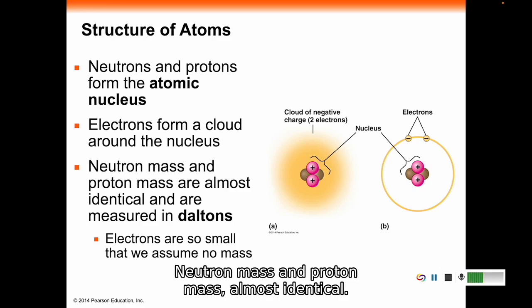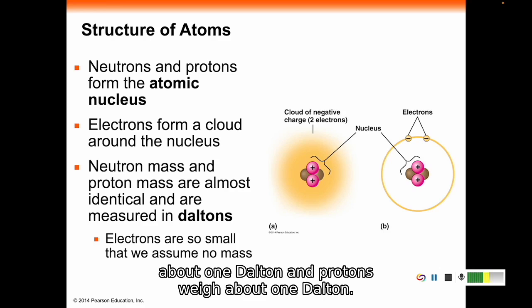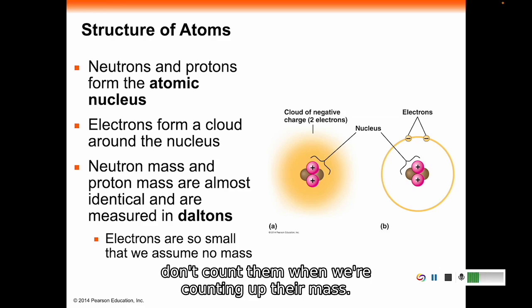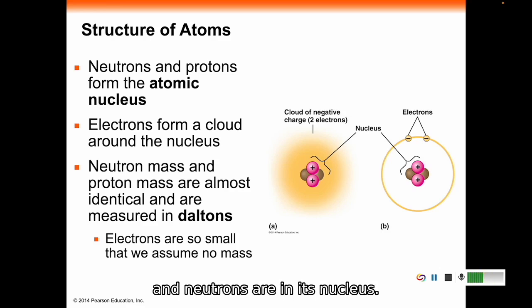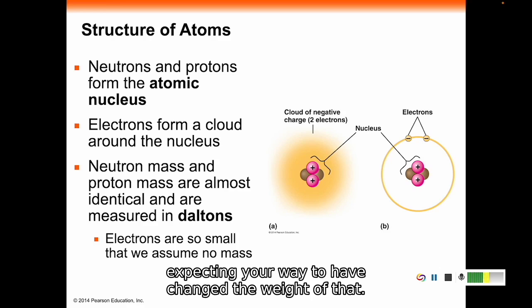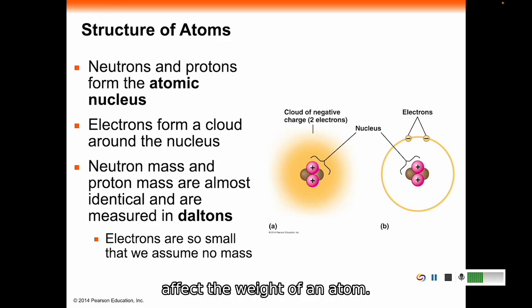Neutrons and protons in the atomic nucleus. Electrons form a cloud around the nucleus. Neutron mass and proton mass are almost identical, and we weigh them each in daltons. Each neutron weighs about one dalton and protons weigh about one dalton. Electrons are so small that we don't count them when we're counting up their mass. You can see how many daltons an element weighs by seeing how many protons and neutrons are in its nucleus. It would be like if you weighed yourself, trimmed your nails, and went back expecting your weight to have changed. Those electrons don't really affect the weight of an atom.